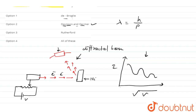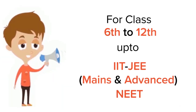Rutherford is not involved in the wave nature of electrons. Rutherford only proved that the atom has a nucleus, so that is not our answer. The only correct option is Davisson and Germer, so option number two should be our answer.